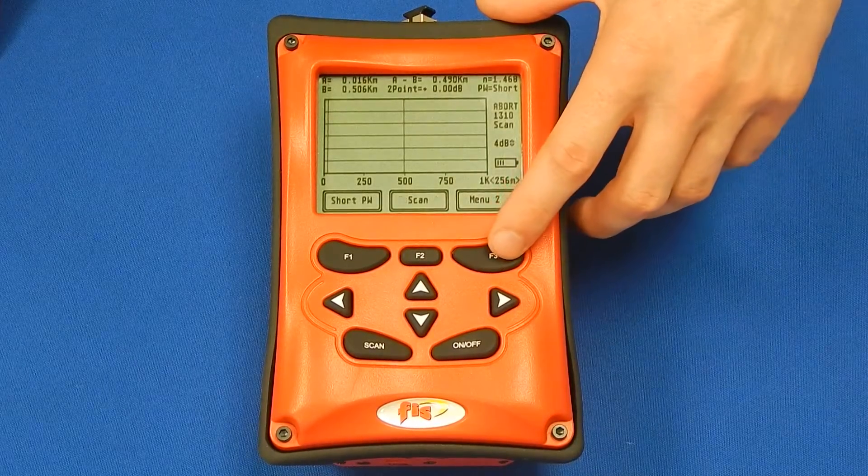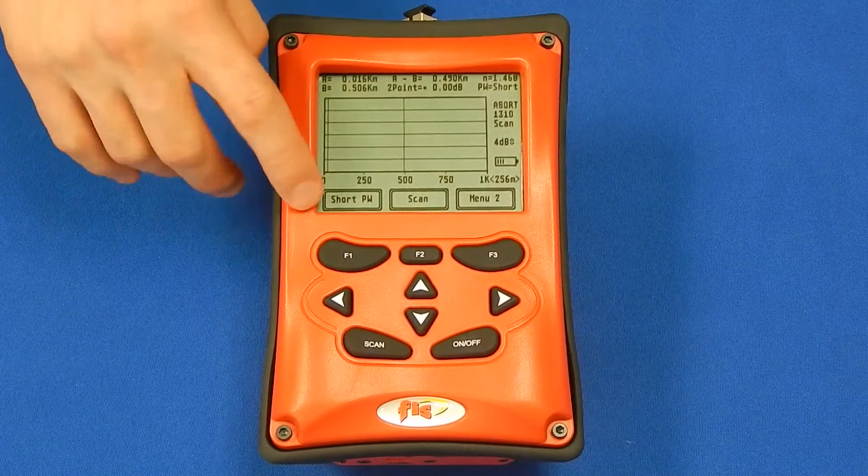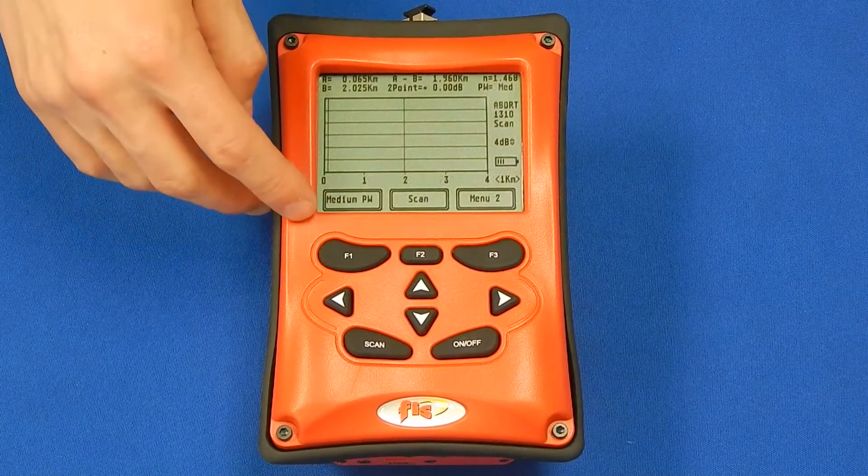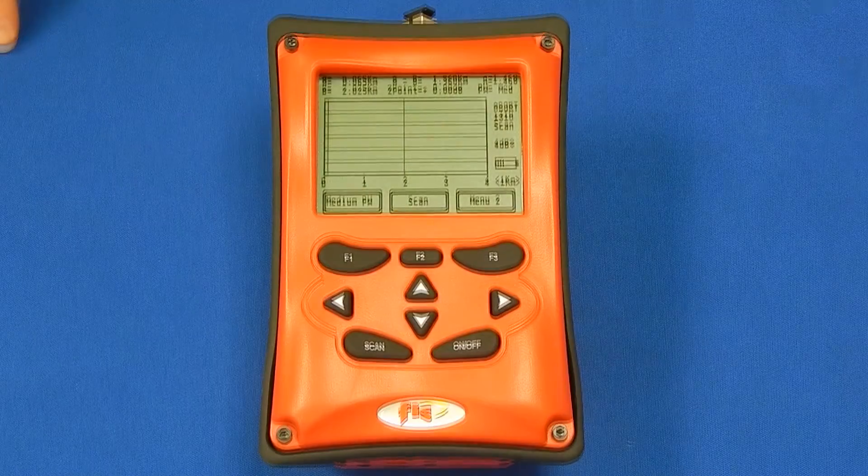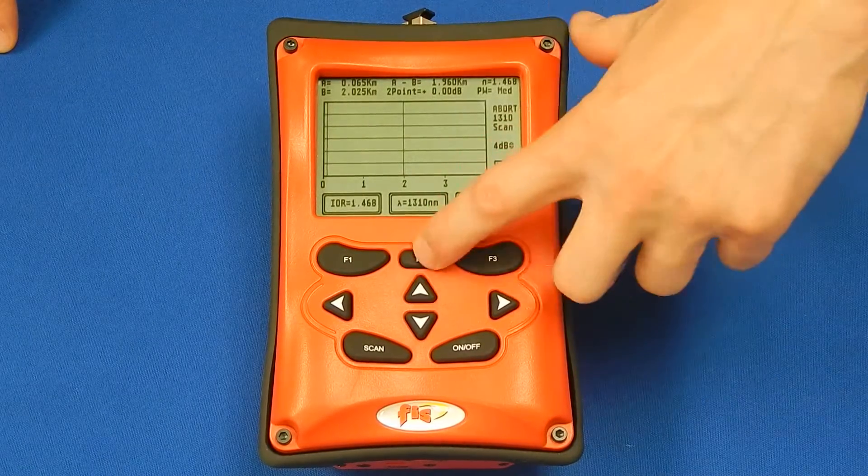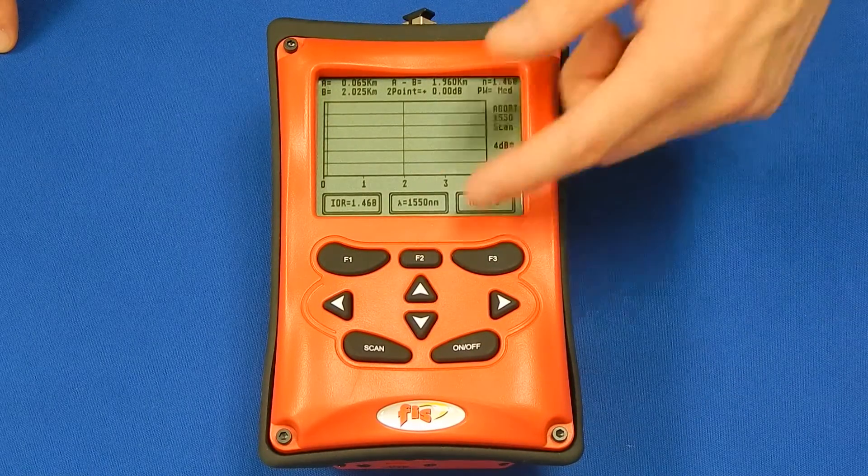First, start by selecting the pulse width and the wavelength for the run of fiber you are testing. We are using a medium pulse width at 1550 nanometer for this test.